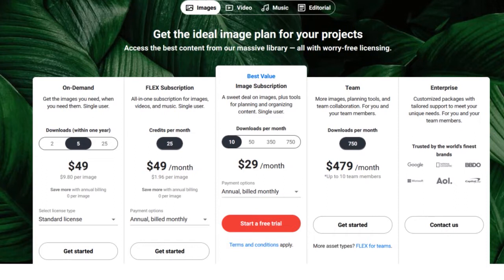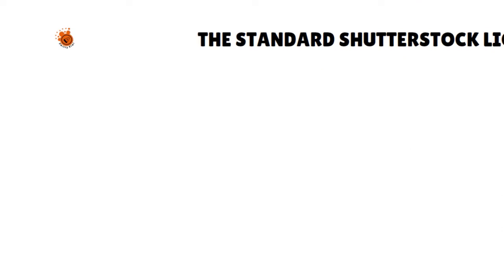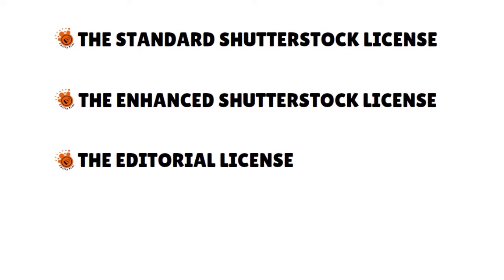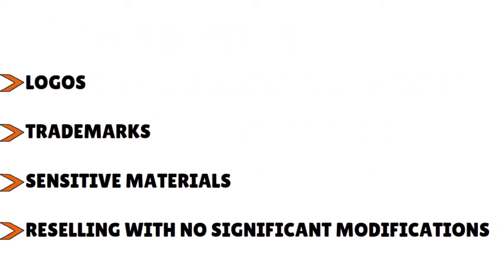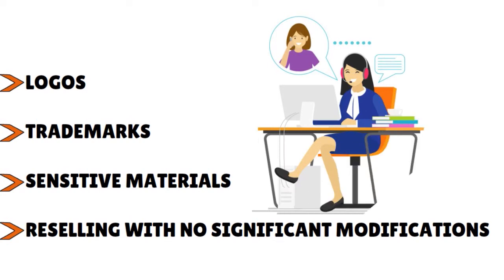Shutterstock offers a lot of licensing options: the standard license, enhanced license, editorial license, and premiere license. It really depends on what you need the license for — totally up to you based on your project. One important note: Shutterstock licenses must not be used for logos, trademarks, sensitive materials, or reselling without significant modification.